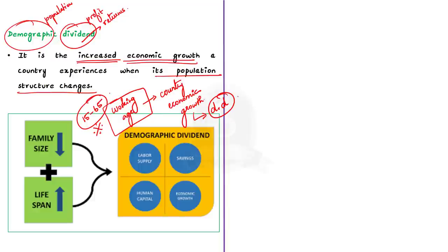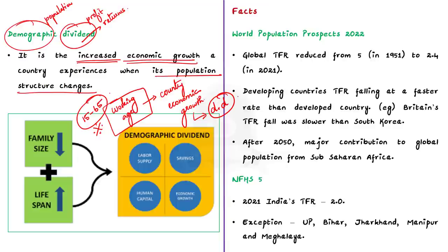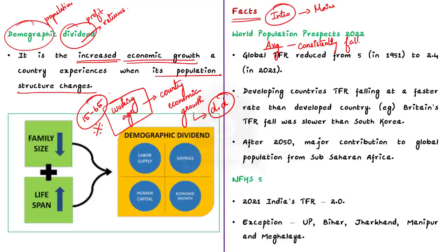Now let us focus on the editorial. There are population-related facts you can use in the introduction of your mains answer. The first fact is that the average global TFR has been consistently falling for the past 70 years — it was 5 in 1951, but by 2020 it reduced to 2.4. This data is according to World Population Prospects 2022.